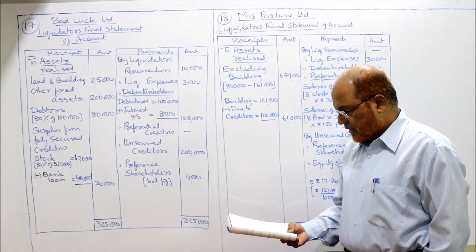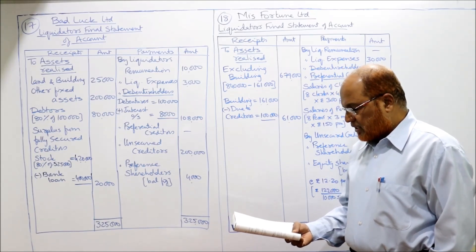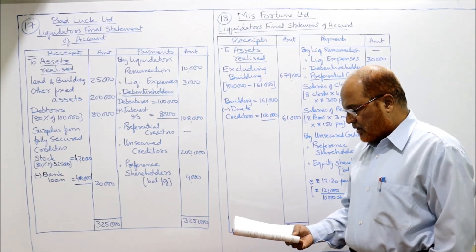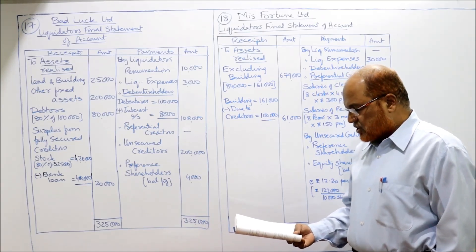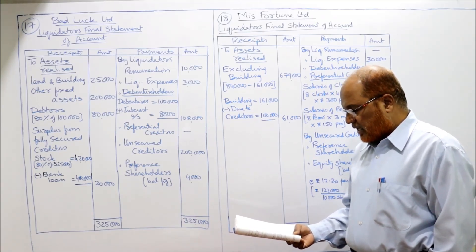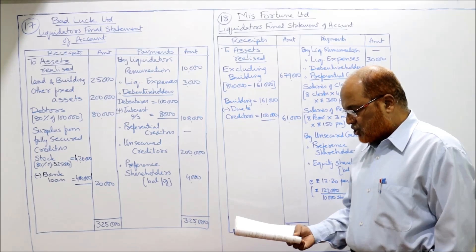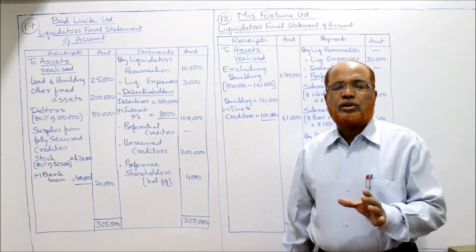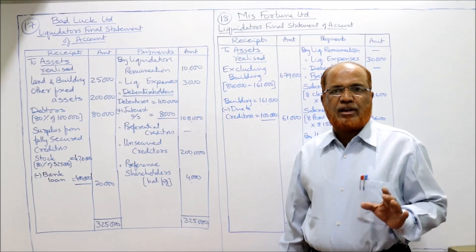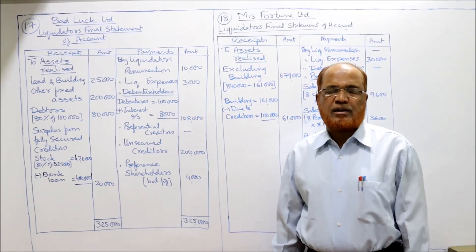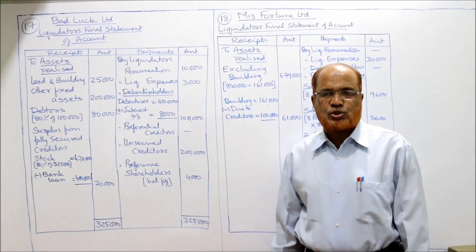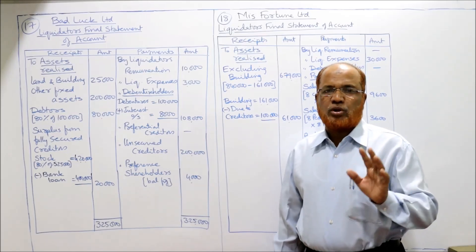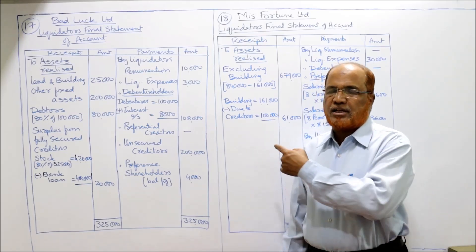The profit and loss account is given on the asset side — just ignore it, that is accumulated loss. The company went into liquidation. Prepare liquidator's final statement of account. Liquidation expenses 3,000 and liquidator's remuneration 10,000 are directly given in this problem — no need to calculate separately in working notes. Both are directly given; take them on the credit side.